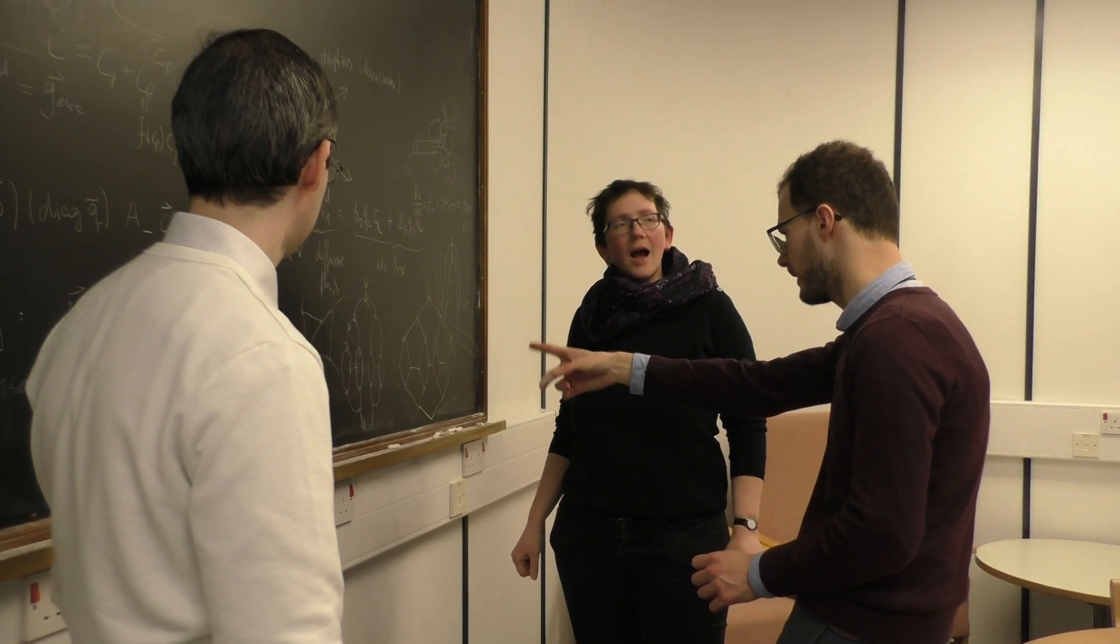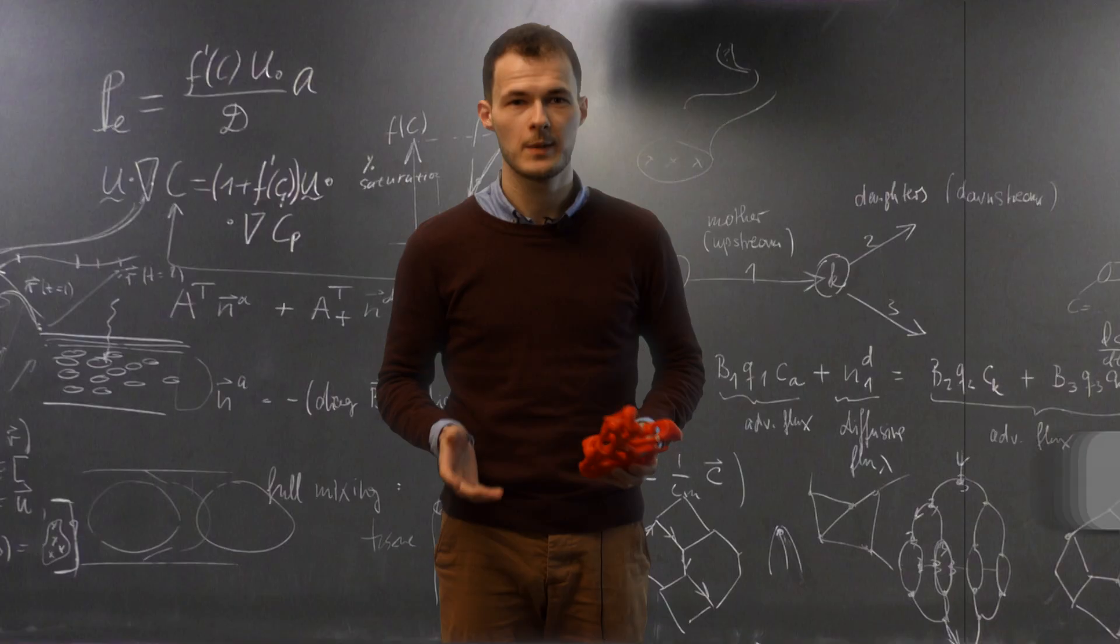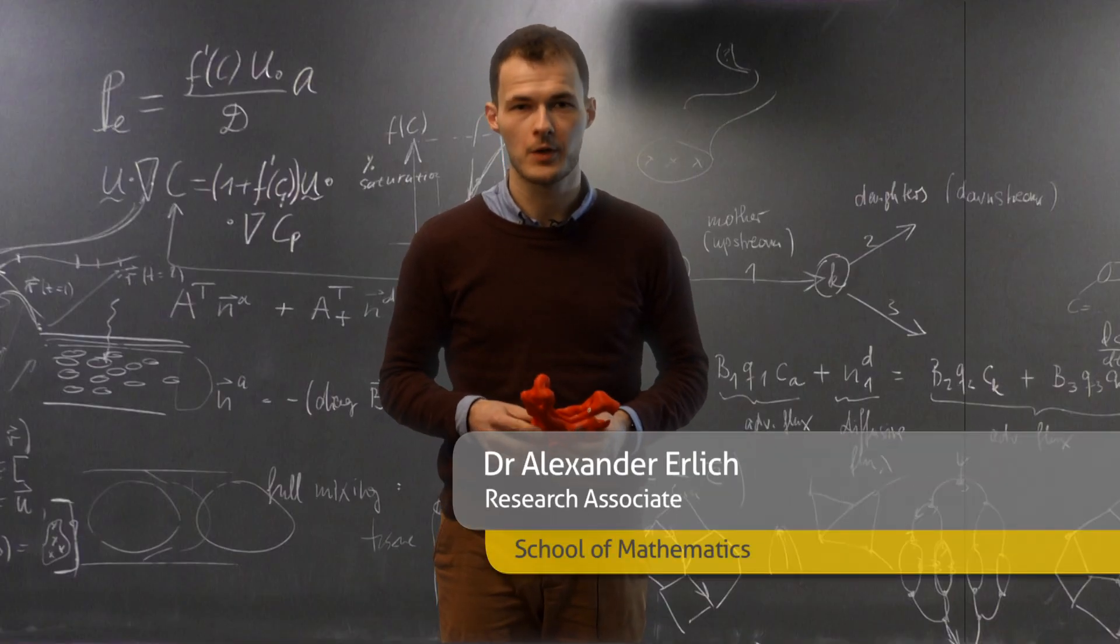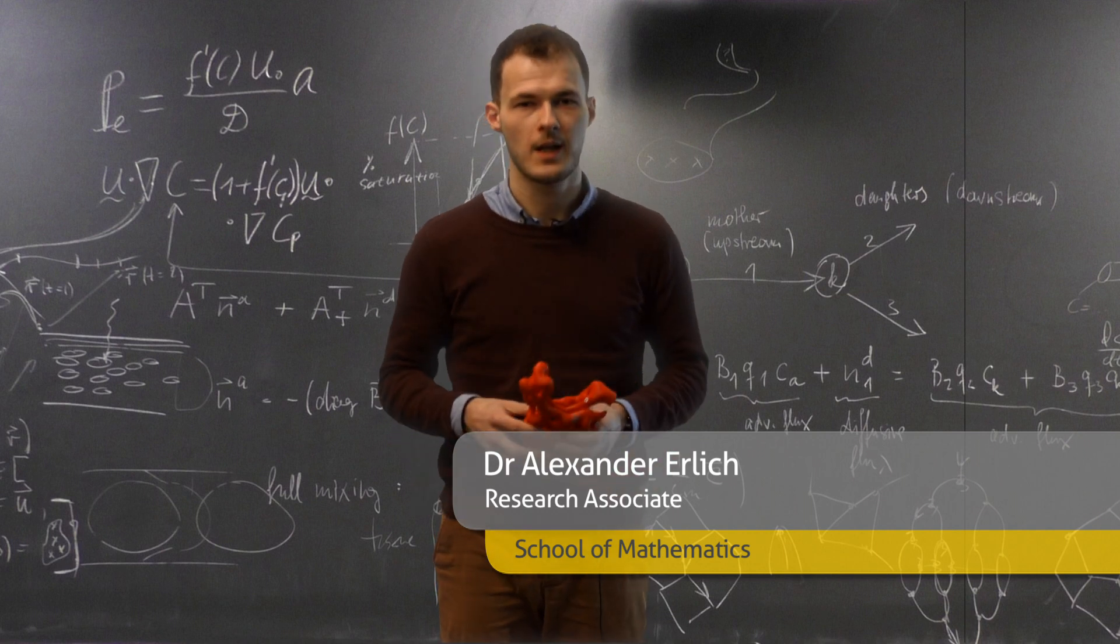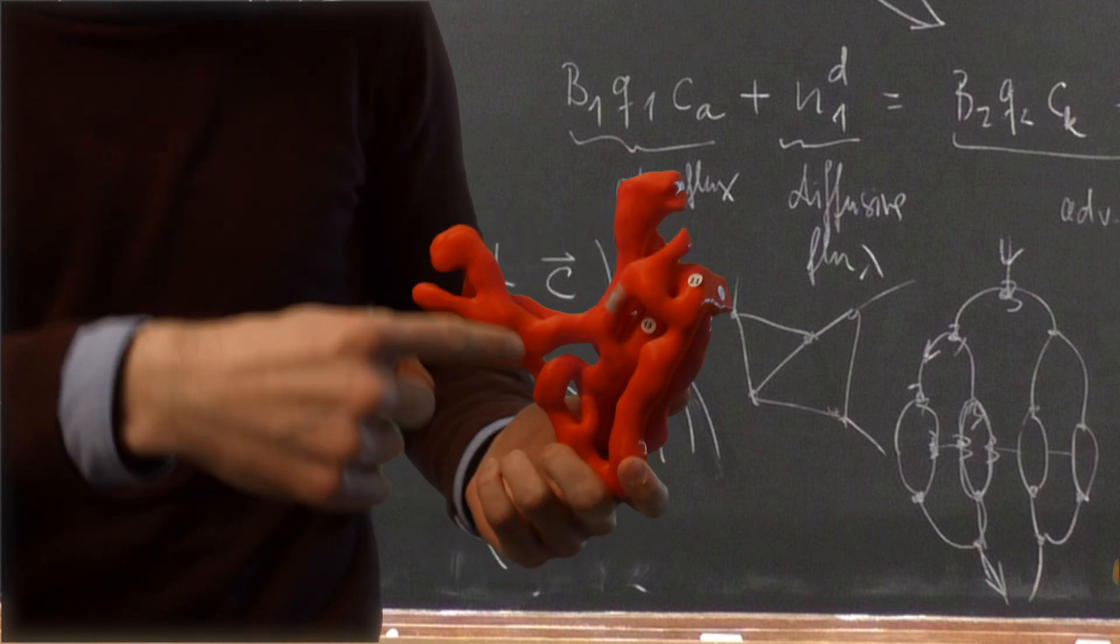This requires a combination of advanced lab experiments, computer simulations and mathematical analysis. We are trying to understand why the placenta sometimes fails to deliver oxygen to the baby. It's a difficult question as the placenta vasculature has many loops and bulges and a complex network of capillaries.